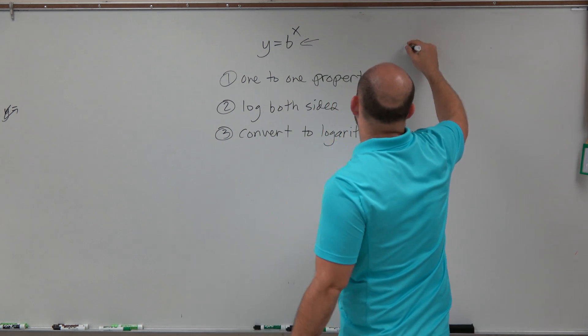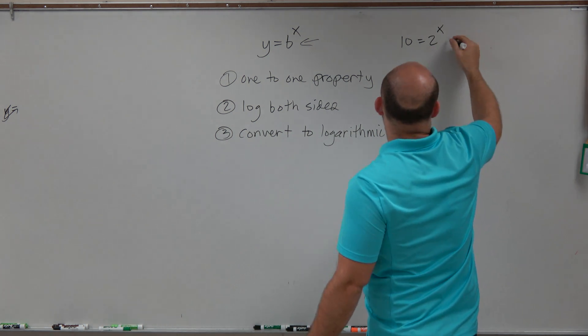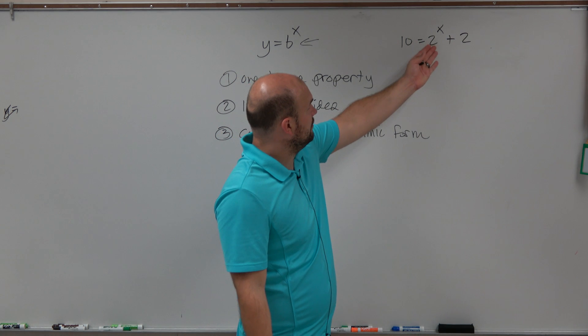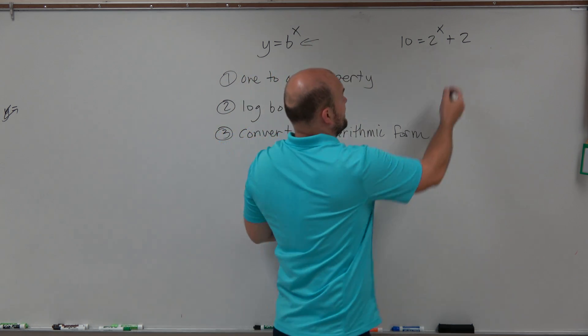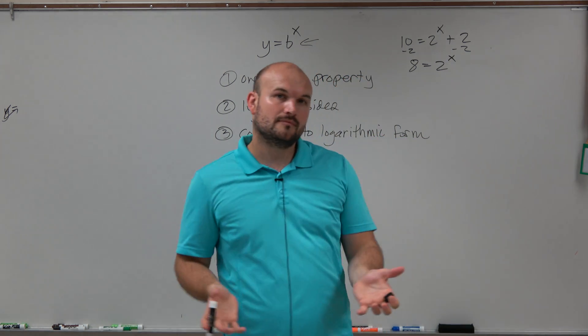So for instance, if I had, I'll just do 10 equals 2 to the x plus 2. In this case, we want to make sure it's in this format. So what I would do is subtract the 2 on both sides. Therefore, I have 8 equals 2 to the x.